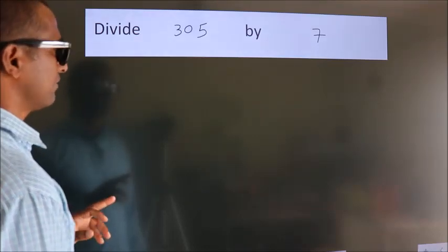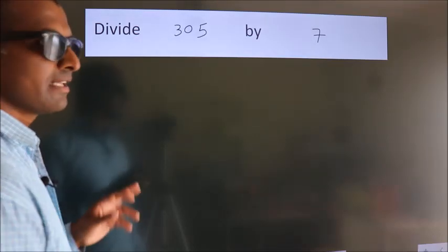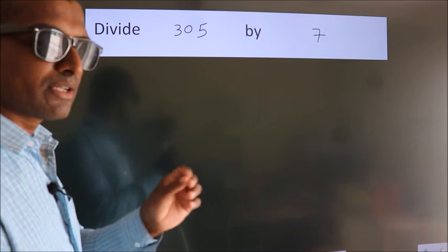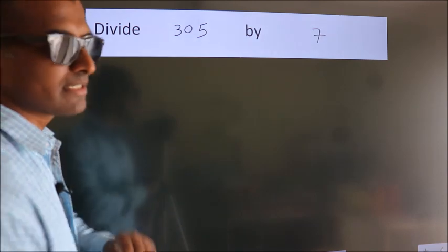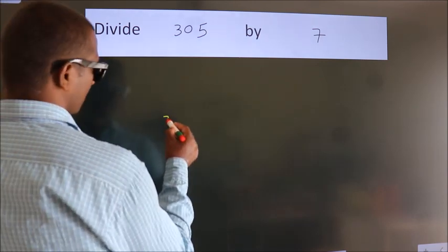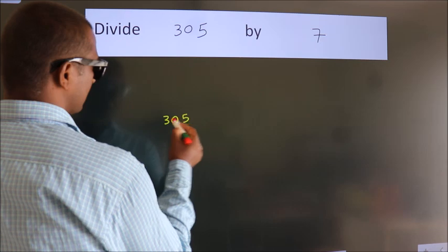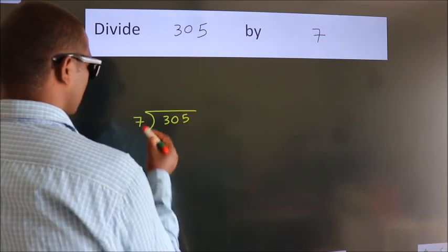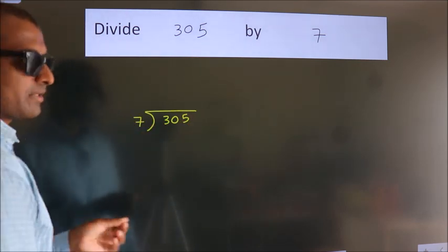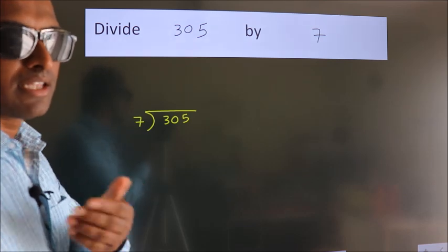Divide 305 by 7. To do this division, we should frame it this way: 305 here, 7 here. This is step 1. Next.